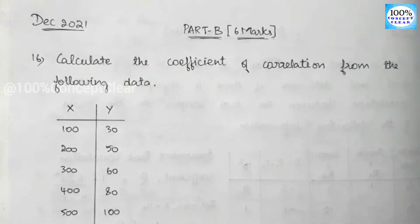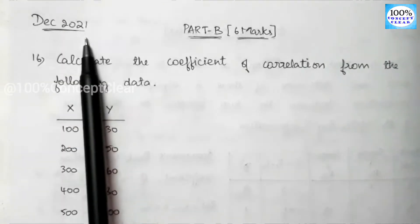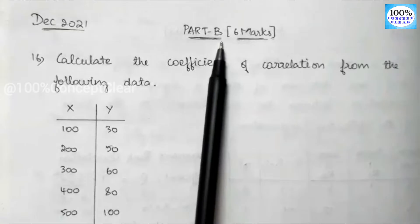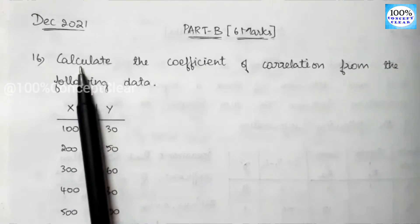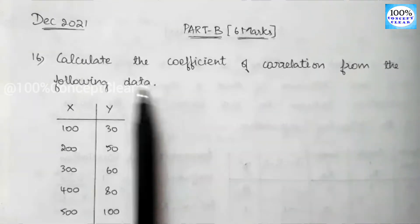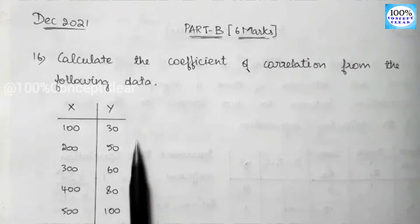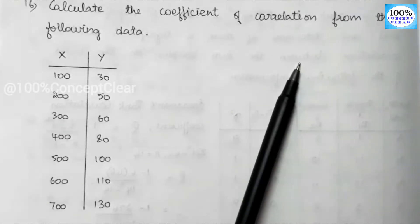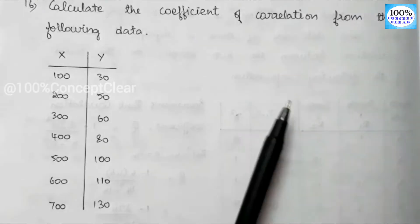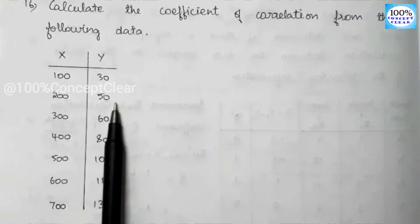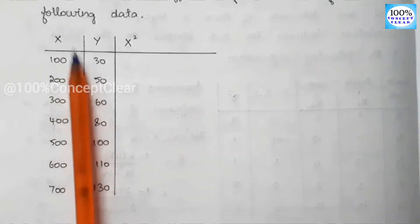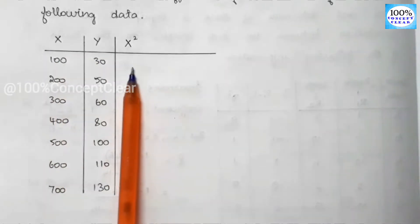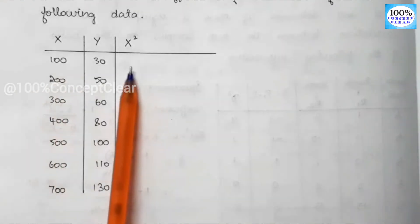We have a question in this video. We have a question in the lesson by 20, 21, and we have a 6-mark sum. So we have a question in the 16th sum and a question in the 17th sum.